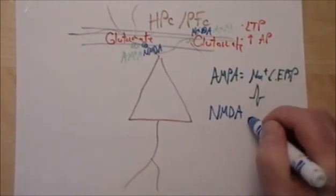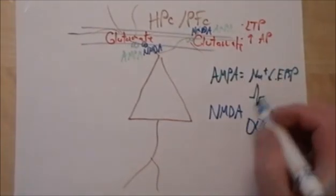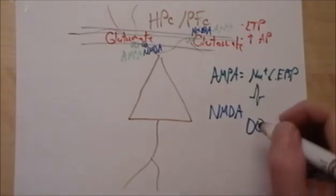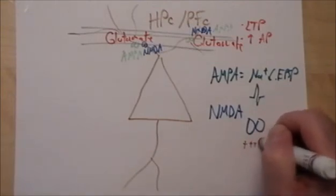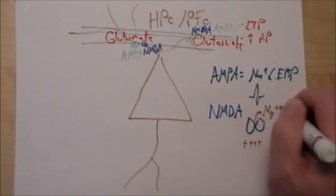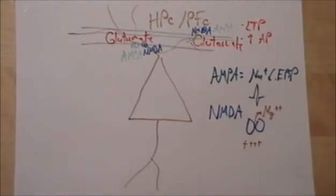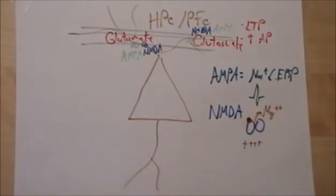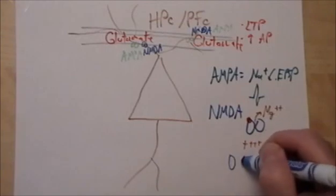When there's a depolarization on the NMDA receptor, remember from your basic 2200, more positive ions inside remove that magnesium block. When you have glutamate bound, that channel will open up. Let's move it to the open state.